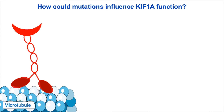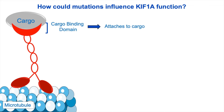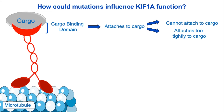Let's start with the cargo binding domain. This is the region of KIF-1A that physically attaches to the cargo that it is trying to carry. A KIF-1A protein with a mutation here may have no issue physically walking along the microtubule, but has great difficulty holding onto the cargo that needs to be transported. Or conversely, a mutation in this region could make KIF-1A too good at holding onto cargo, so that it cannot release cargo once it is delivered. As you can imagine, both of these scenarios would make cargo transport very difficult.